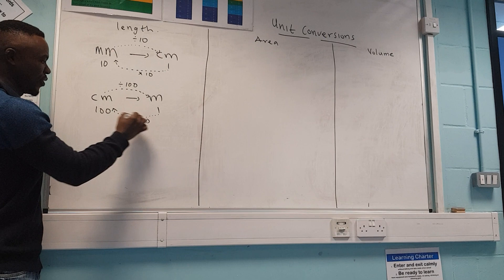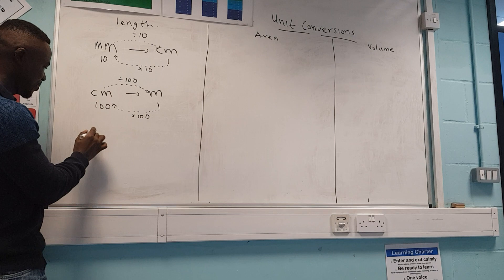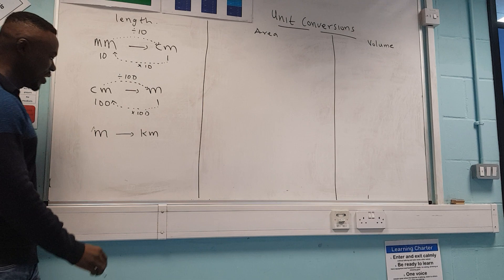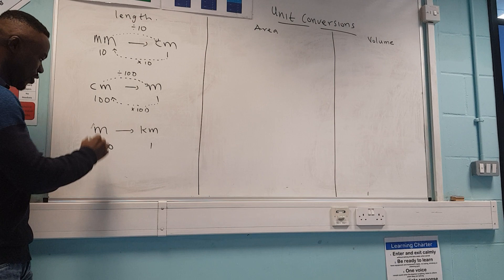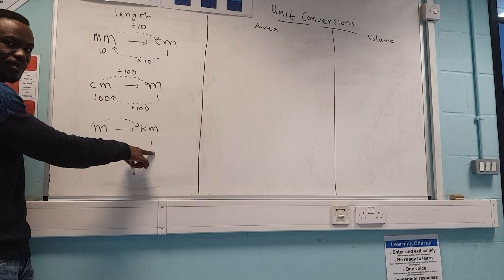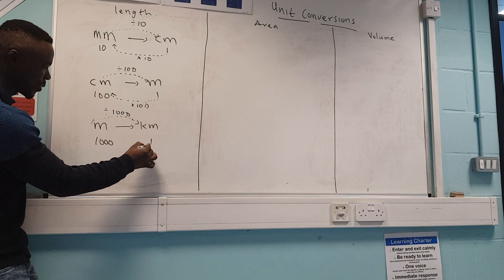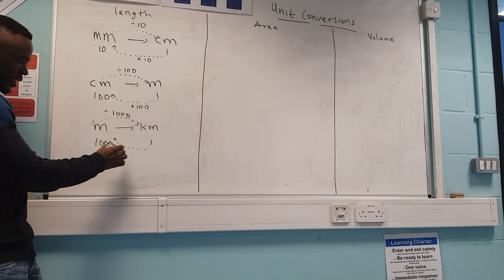Then we can move from meters to kilometers. A thousand meters gives you one kilometer. So if you're moving from meters to kilometers, the number has to be small, so you divide by one thousand. Moving from kilometers to meters, multiply by one thousand because the answer has to be big. That is how you convert your units.